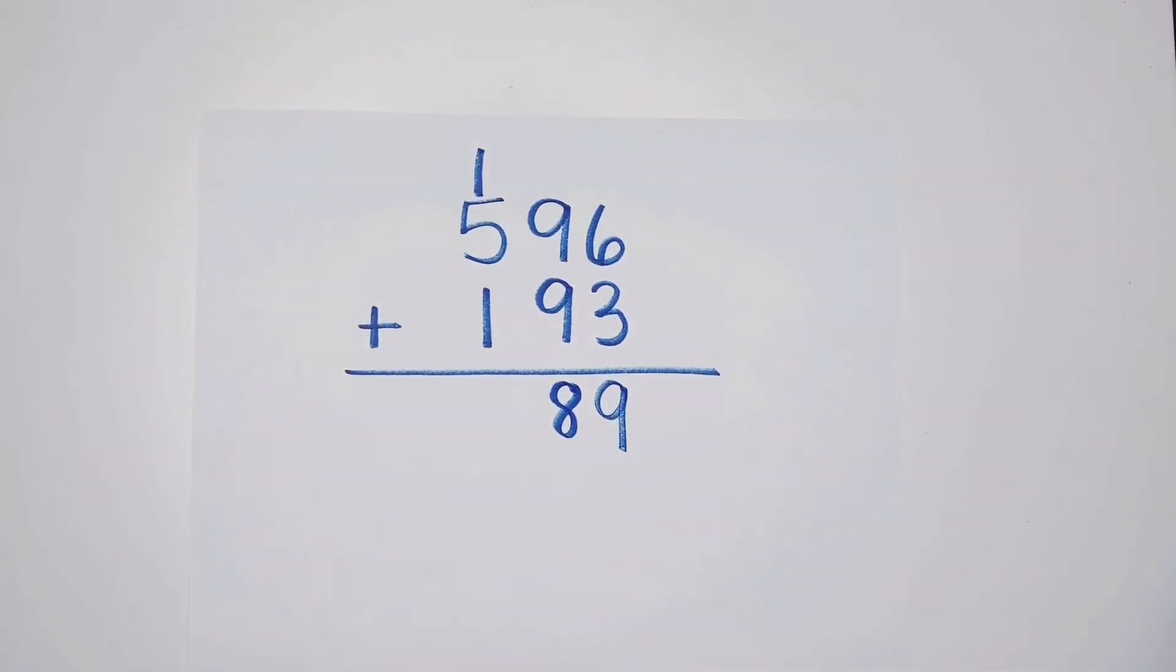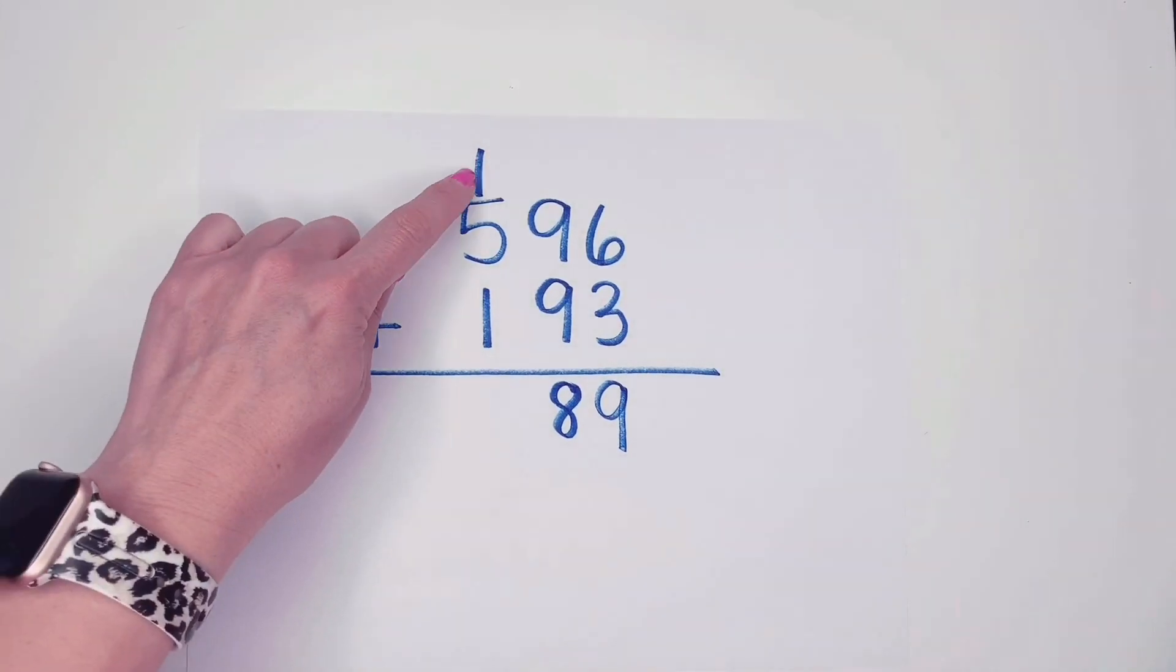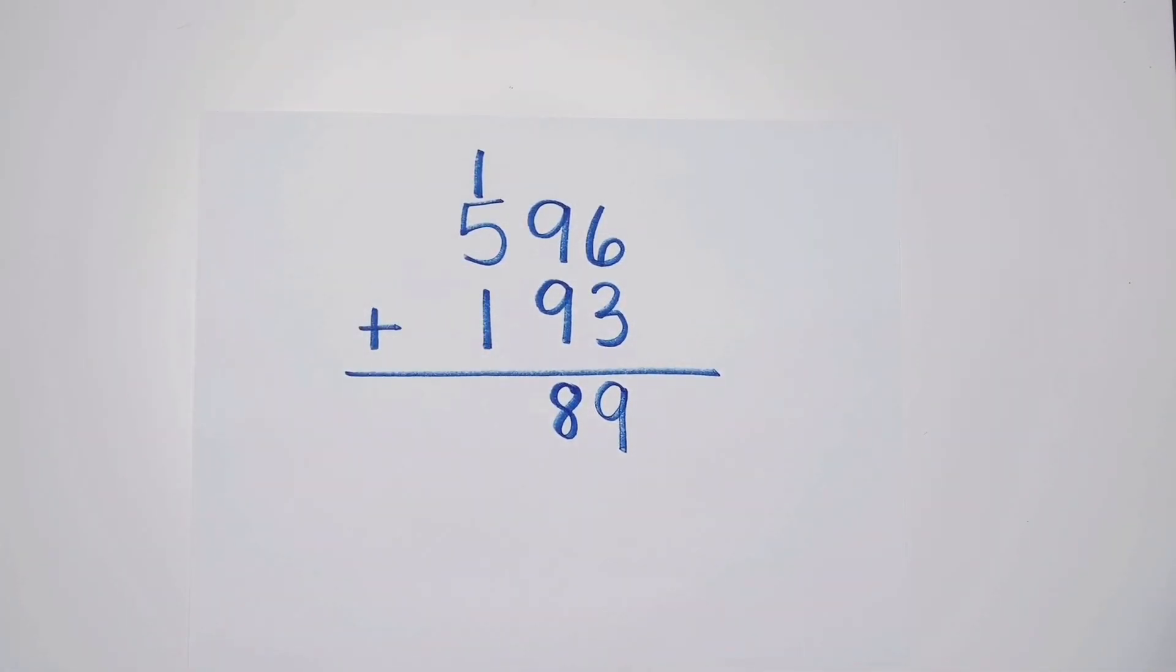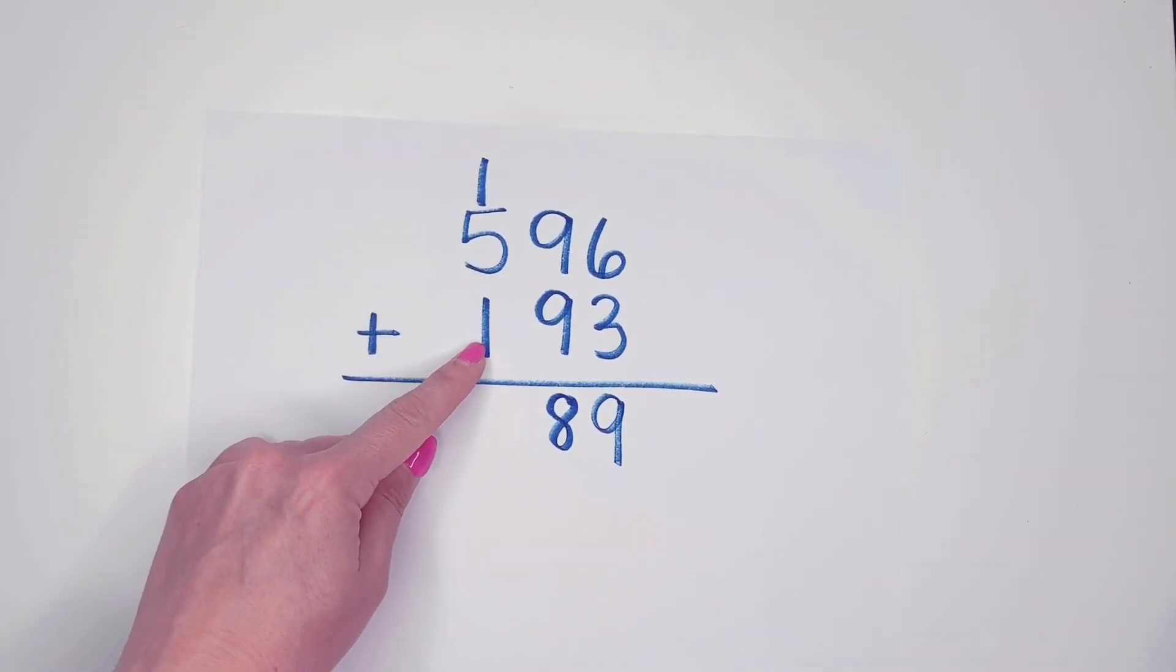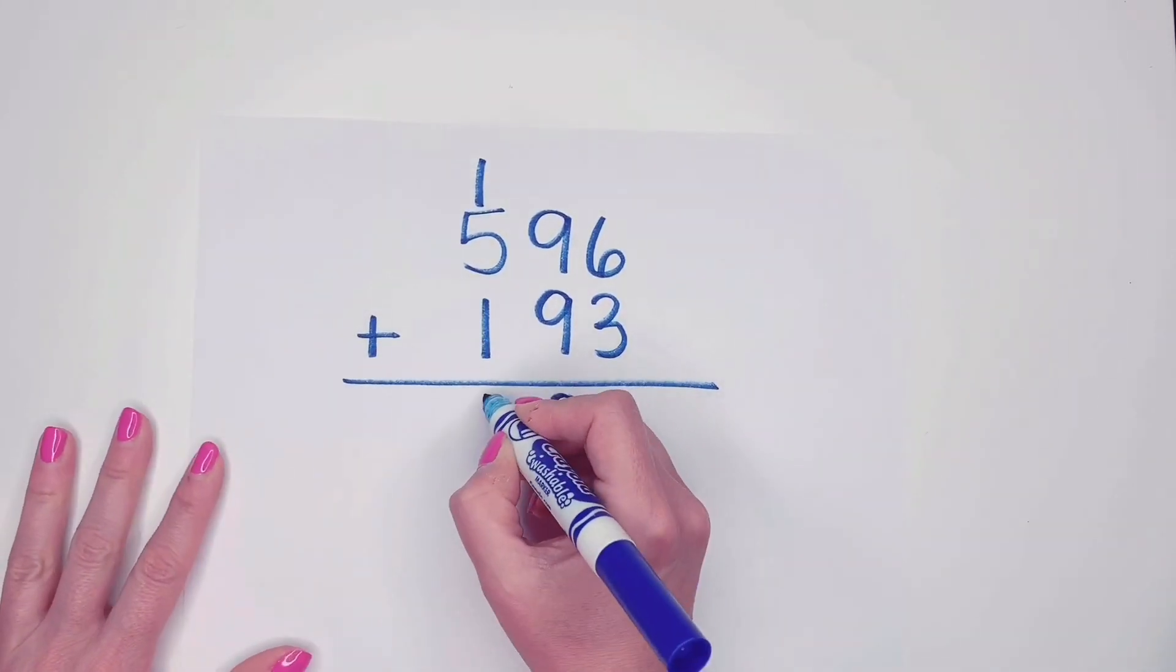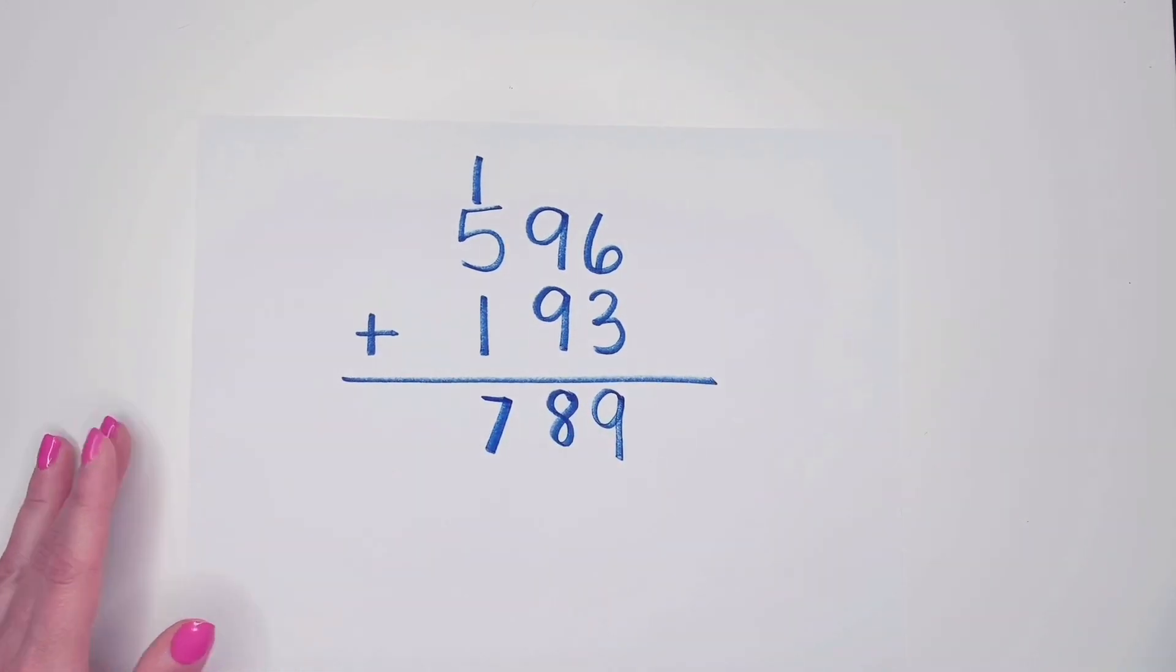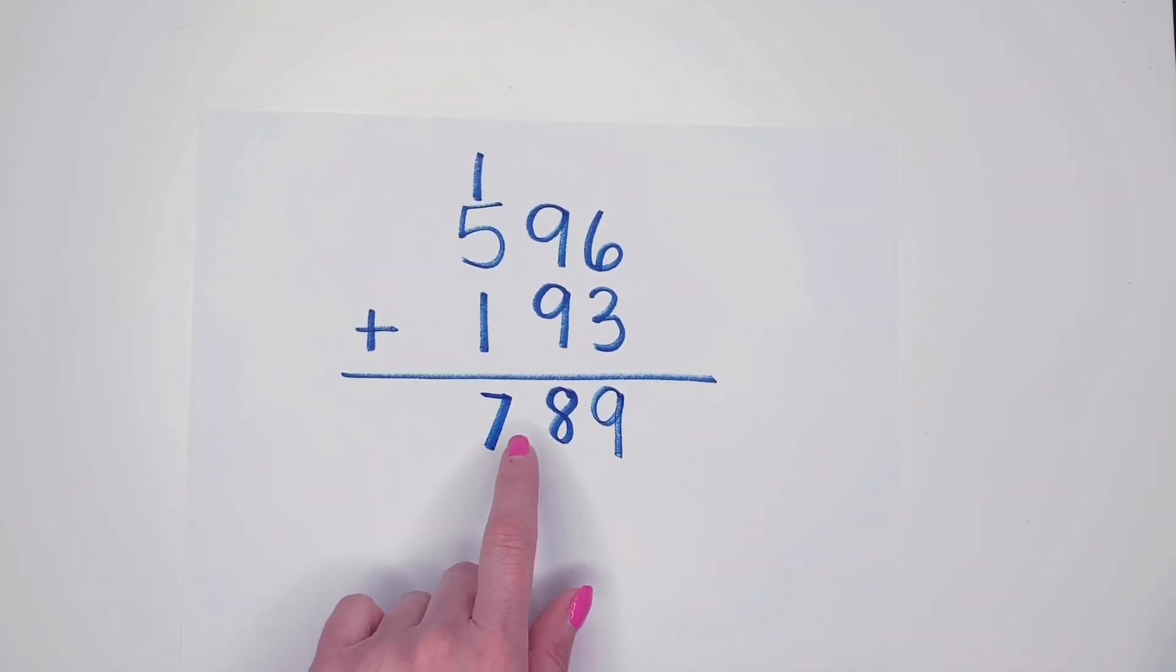Now we can count our hundreds column. One plus five is six plus one more is seven. Remember, it's just like saying 100 plus 500 plus 100 is 700. So the answer to this problem is 789.